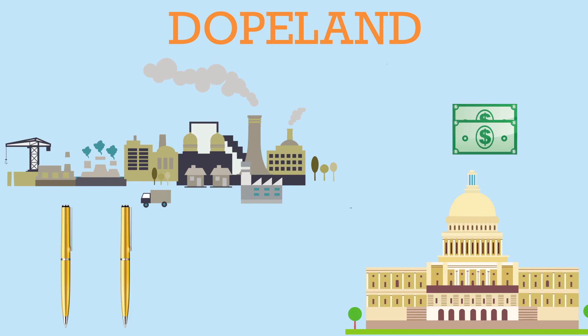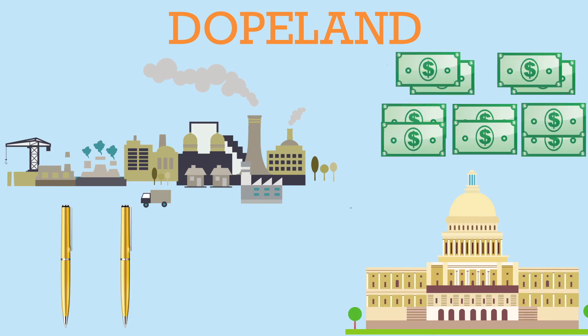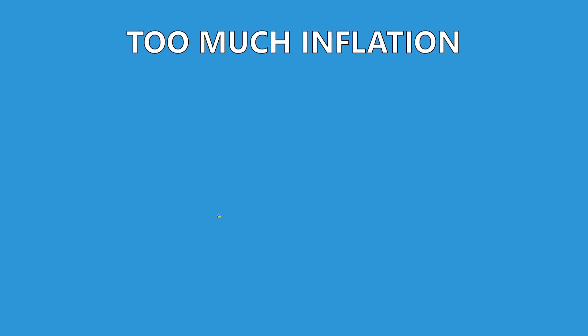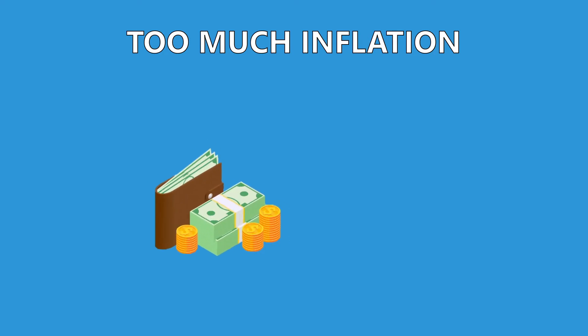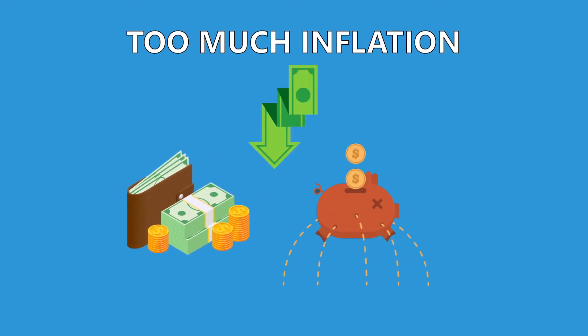If they decide to print more money — say ten dollars — the value of each pen will be five. That is inflation. The pen which was one dollar before now has a price of five dollars. Because too much inflation means that the money in your wallet today will be worth less tomorrow.